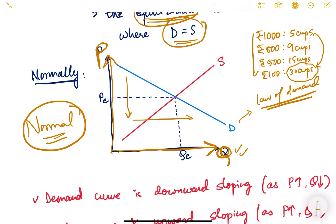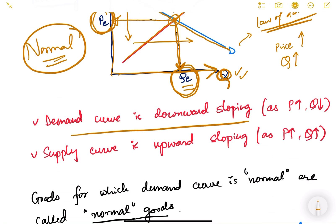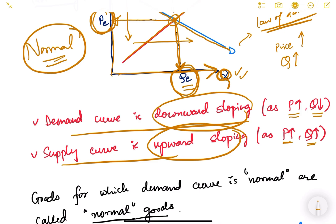The supply curve is normally upward sloping — as the price increases, the seller will supply more quantity because it is more beneficial for him to work harder. Wherever the demand curve and supply curve intersect, that point is known as market equilibrium. The quantity at this point on the x-axis is the equilibrium quantity (Qe) and the price is the equilibrium price (Pe). This is true for any market with normal goods.